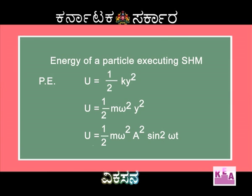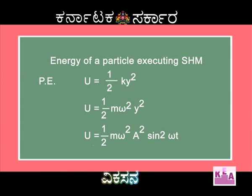The potential energy of the particle is given by U = half k y squared. We know y = A sin(omega t). Therefore, U is given by U = half k y squared. We know that k = m omega squared.